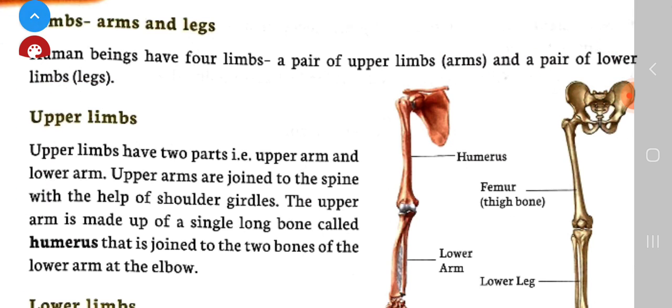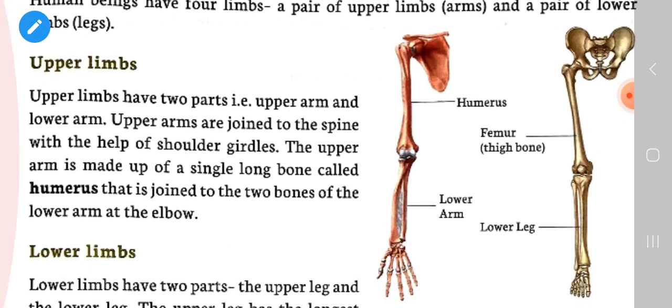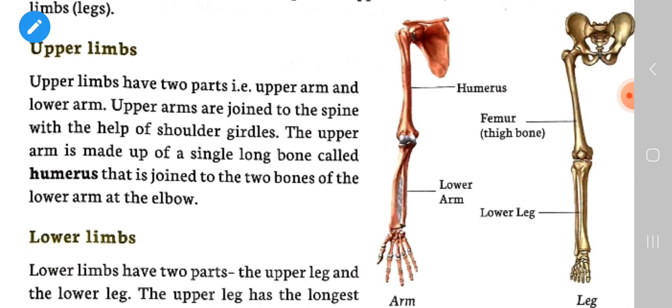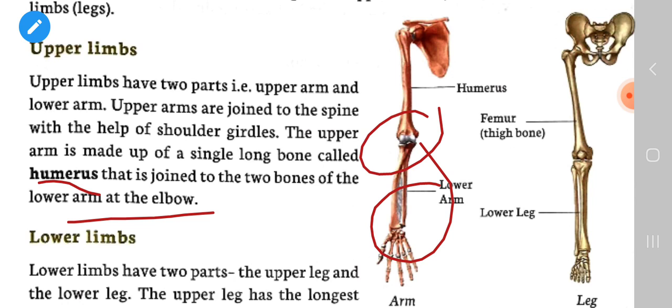Upper limbs have two parts: the upper arm and the lower arm. The upper arm is joined to the spine with the help of shoulder girdles. The upper arm is made up of a single long bone called the humerus, which is joined to the two bones of the lower arm at the elbow.